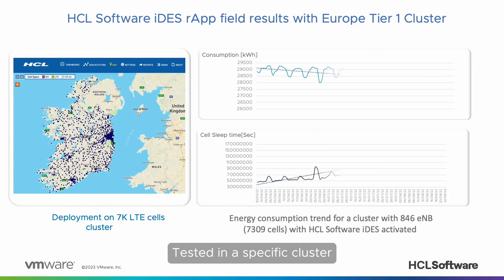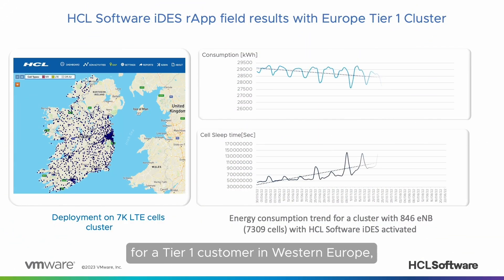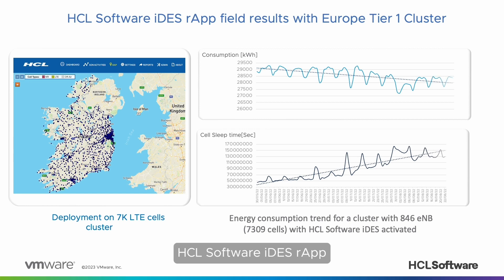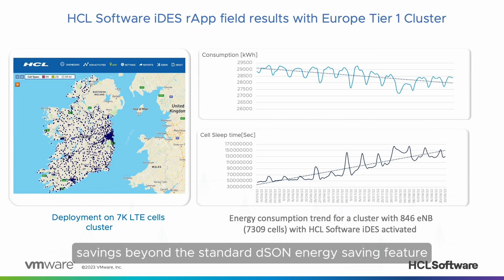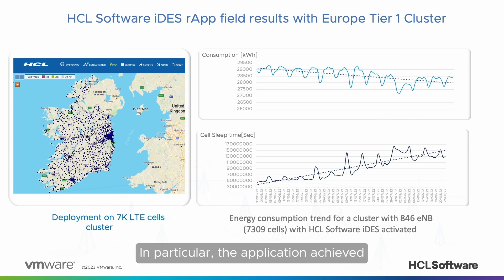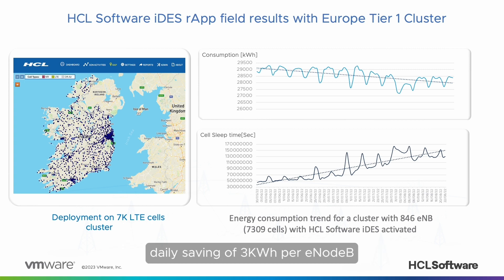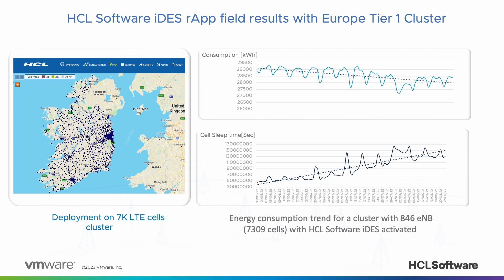Tested in a specific cluster for a Tier 1 customer in Western Europe, HCL Software IDES R-App proved additional energy savings beyond the standard DSON energy saving feature. In particular, the application achieved an additional 7% energy savings, with an average daily saving of 3 kW per eNodeB.